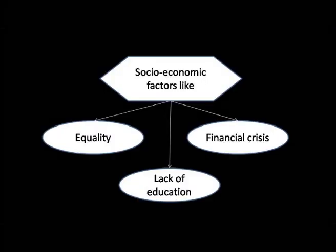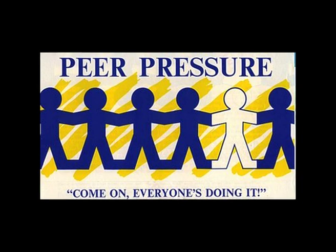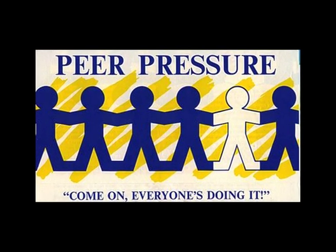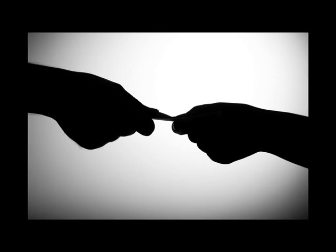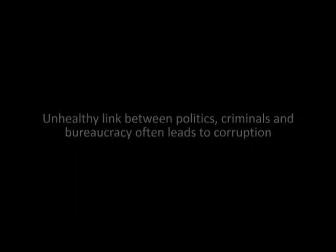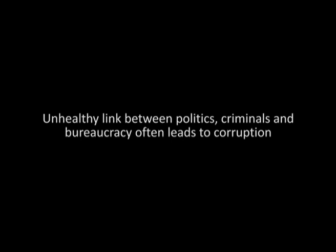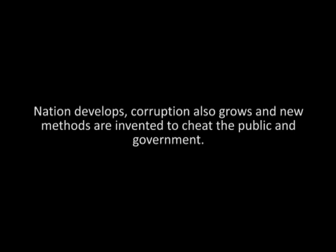Socio-economic causes: in society, the peer group can influence a person to commit crime. Socio-economic factors like inequality, lack of education, and financial crisis can provoke a person to steal or commit other crimes. Peer pressure along with greed for material wealth also influences a person to take the path of crime. Over the years, corruption has increased and is now seen in all spheres of daily life. The unhealthy link between politics, criminals, and bureaucracy often leads to corruption, and as our nation develops, corruption grows and new methods are invented to cheat the public and government.